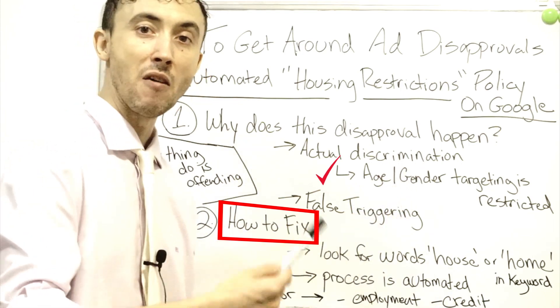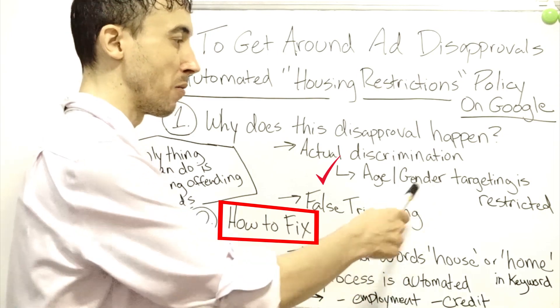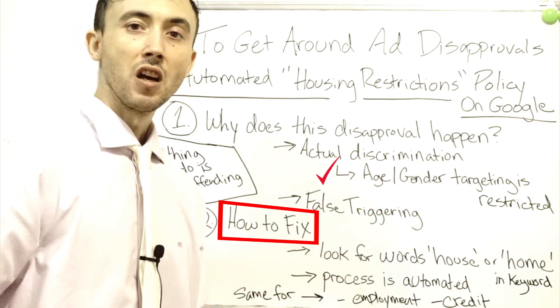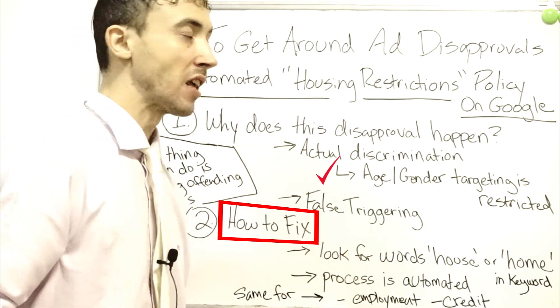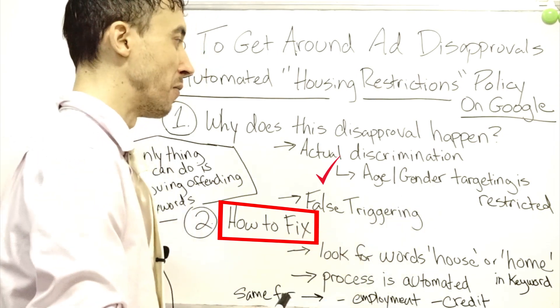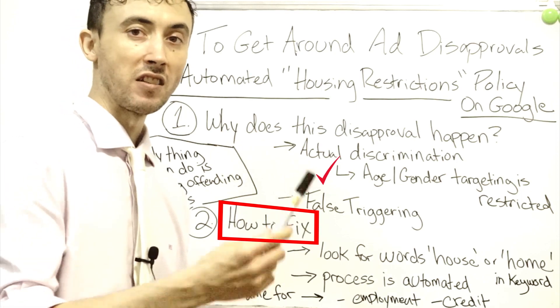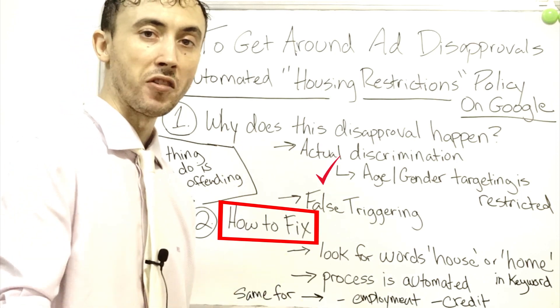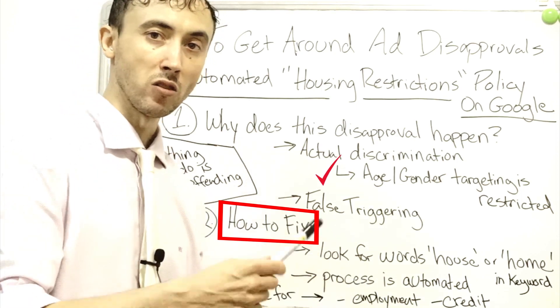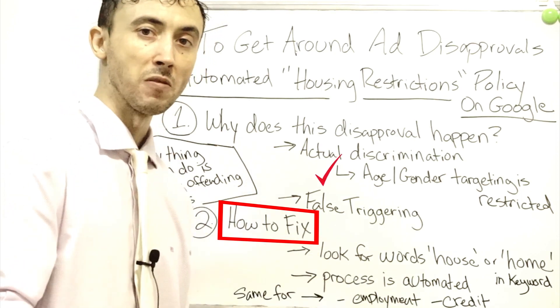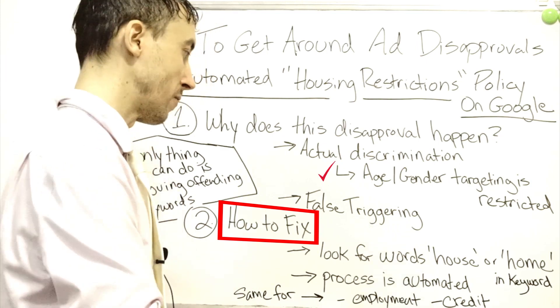They'll let you advertise, but you won't be able to, quote unquote, discriminate at that point in time. Whereas if you try to discriminate outright in the ad copy or the landing page, they'll just shut your ads down entirely. It's a different level of restriction.